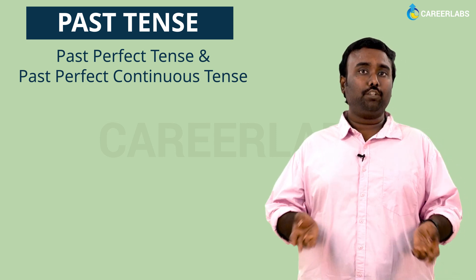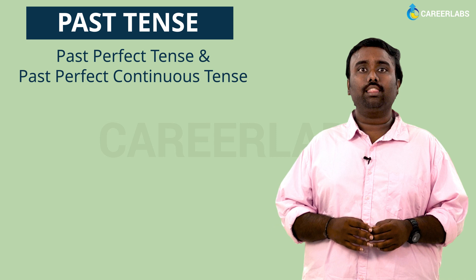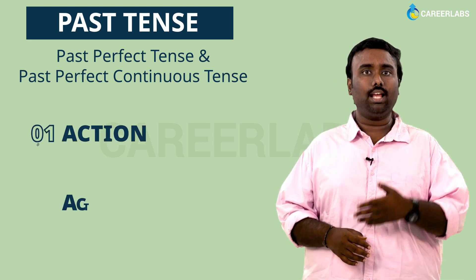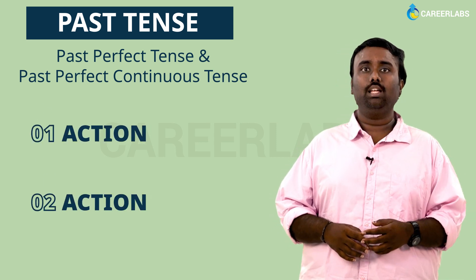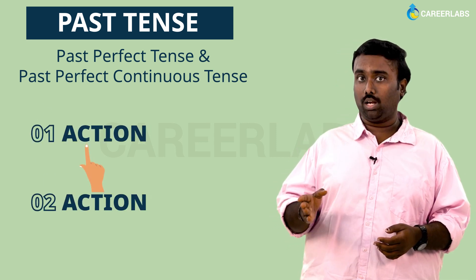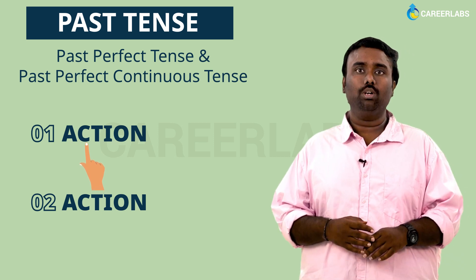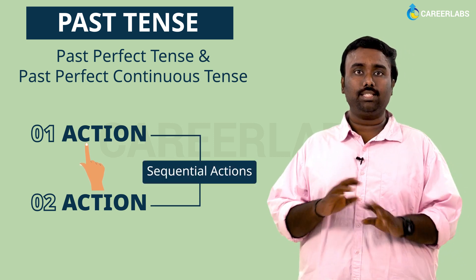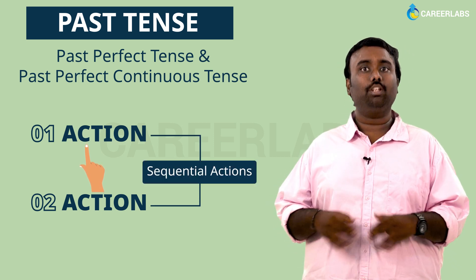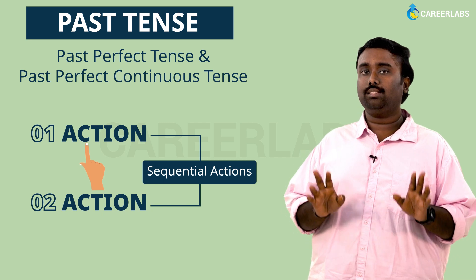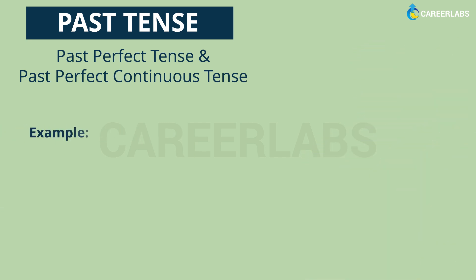There would be two actions — let's name them action one and action two. Action one would have happened before action two, making them sequential. That sequential relationship is your time clue. To make things easier to understand, let's look at an example of the past perfect tense.